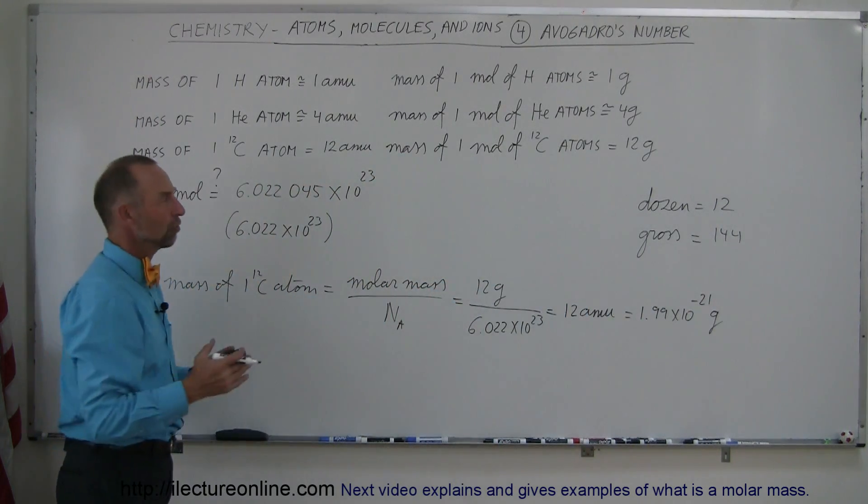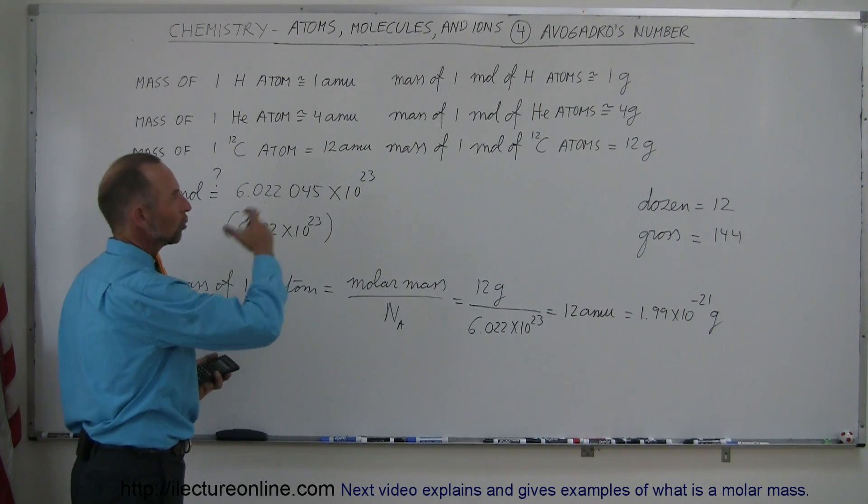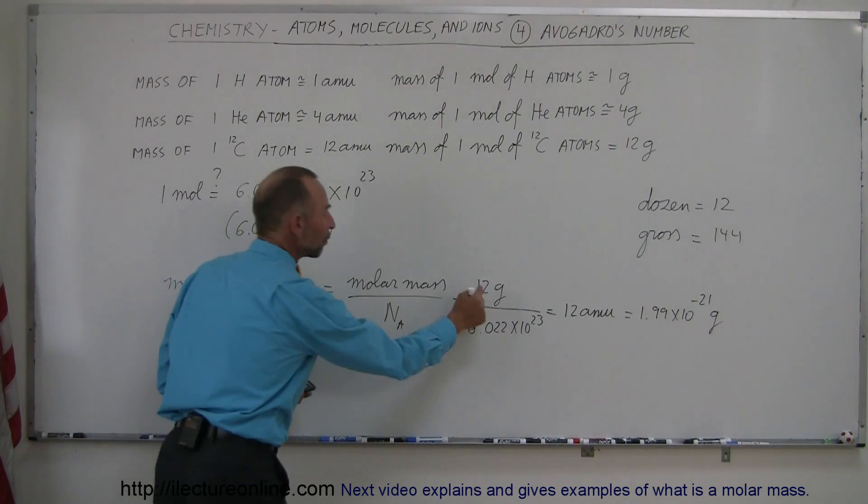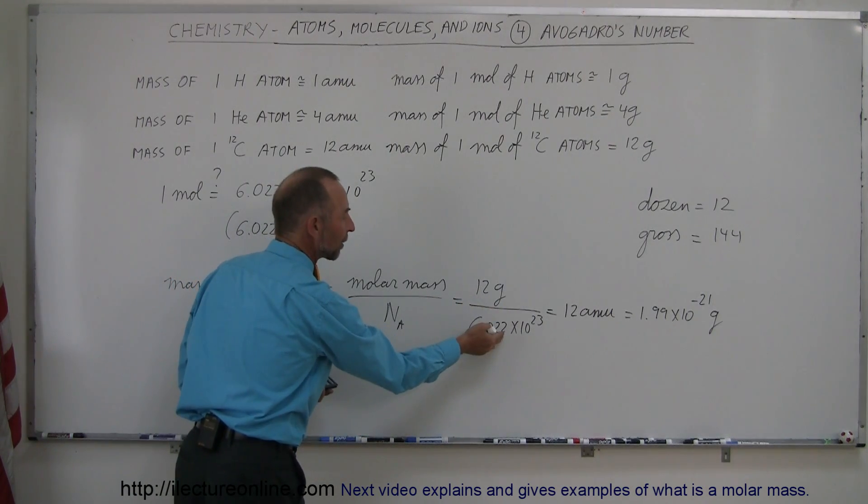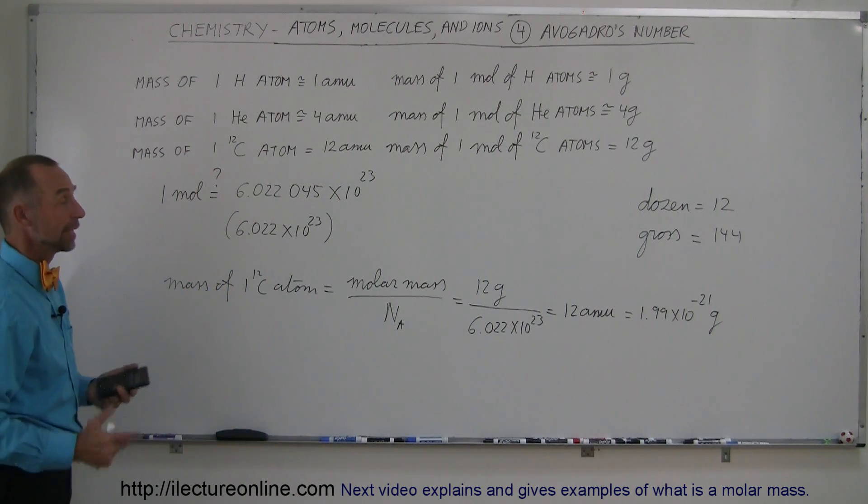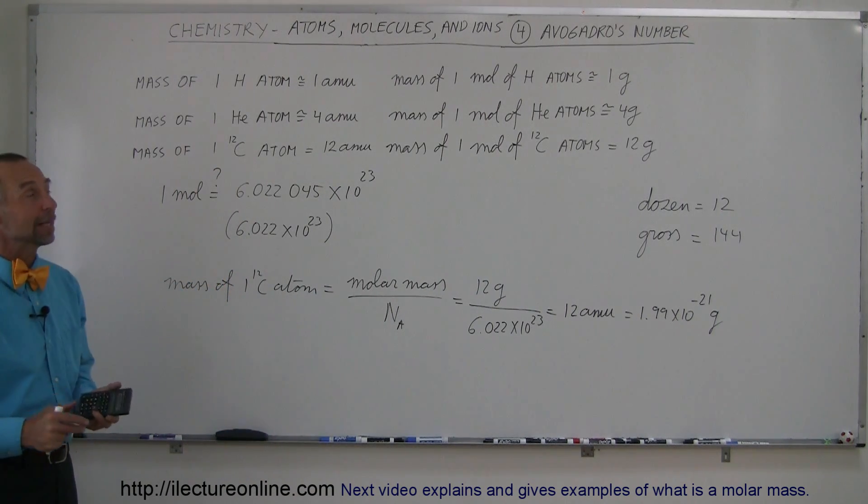So it's a conversion factor from AMUs to grams, or it's another way to calculate the mass of a single atom if you know the mass of a mole of atoms. All you have to do is divide by Avogadro's number, and you have the mass of a single atom. And that's how we can explain Avogadro's number.